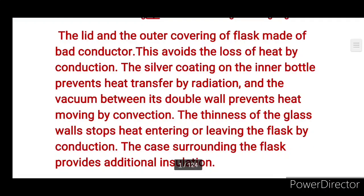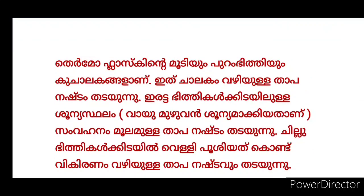The lid and outer covering of the flask is made up of bad conductors, which avoids the loss of heat by conduction. The silver coating on the inner bottle prevents heat transfer by radiation, and the vacuum between its double wall prevents heat moving by convection. The thinness of the glass wall stops heat entering or leaving the flask by conduction. The case surrounding the flask provides additional insulation.